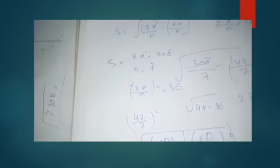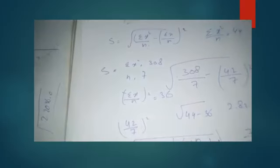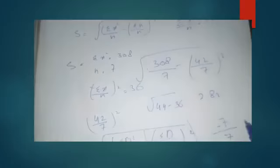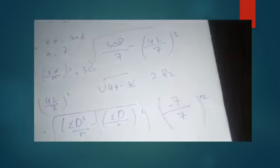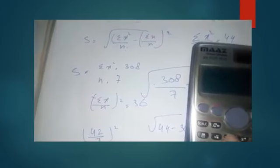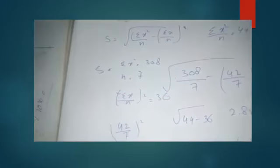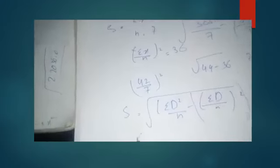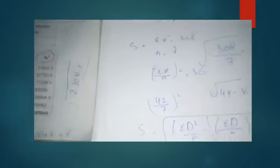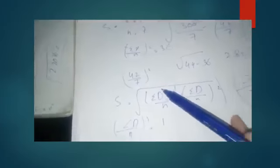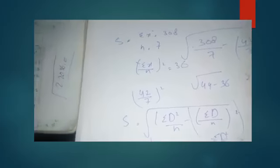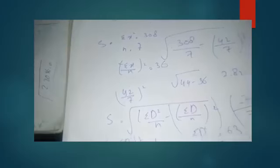The sum of d squared is 63, and the sum of d is minus 7. For the first part: minus 7 divided by 7 (the total number), and the answer is minus 1. So this part equals 1 (squared). The next step is to calculate the other part.